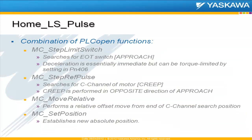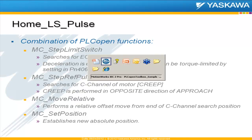Inside the function block, it's really a combination of PLC open functions in a sequence. First, it uses an MC Step Limit Switch to go find the limit, and the deceleration is essentially immediate, but it can be torque-limited if needed by setting a value in parameter 406. Then it moves on to an MC Step-Ref Pulse, which searches for the C channel — that's the creep part. The creep is always performed in the opposite direction of the approach. Then it does an MC Move Relative, and finally sets the position for the new absolute position.